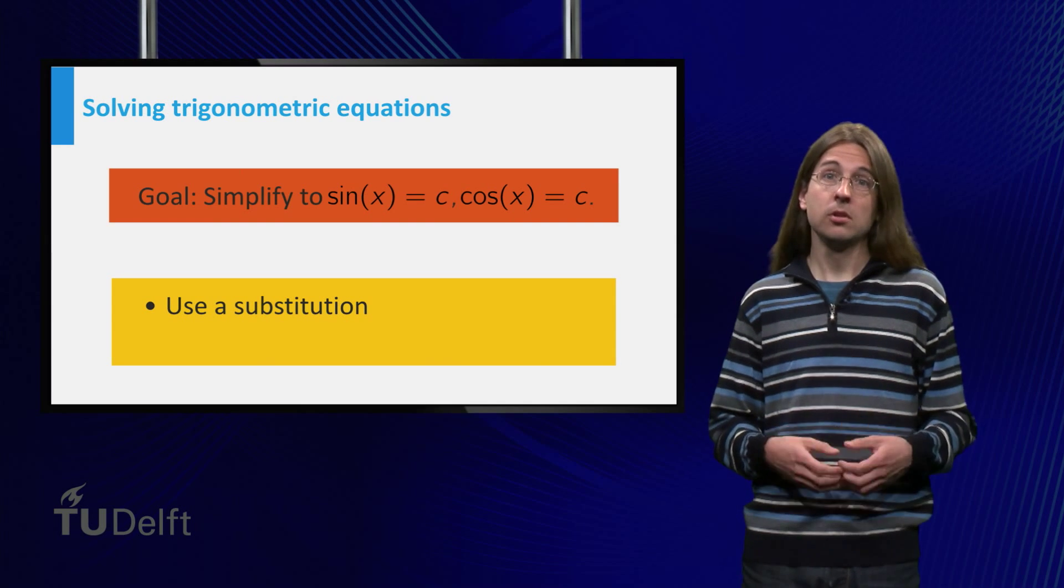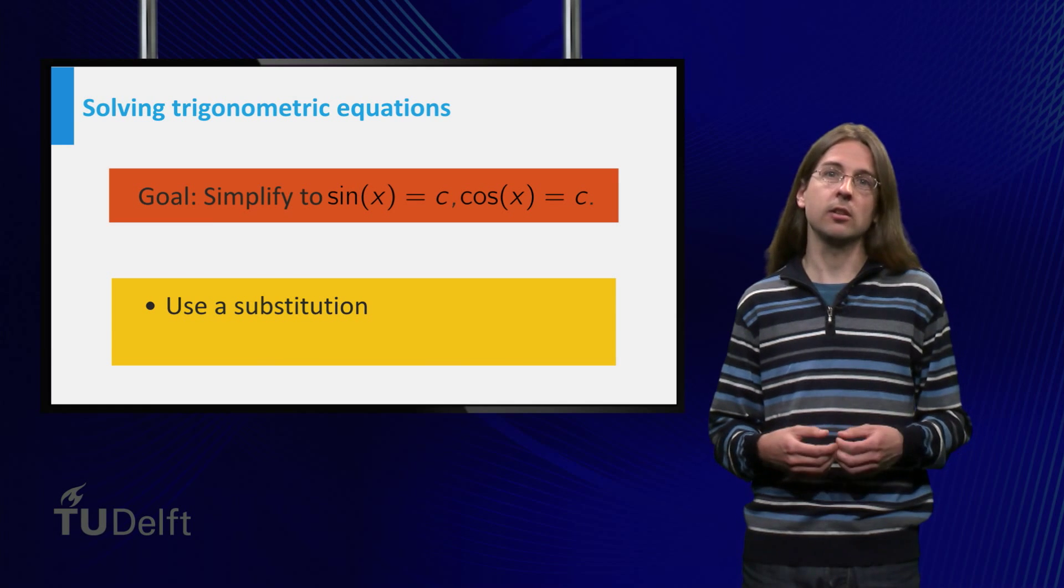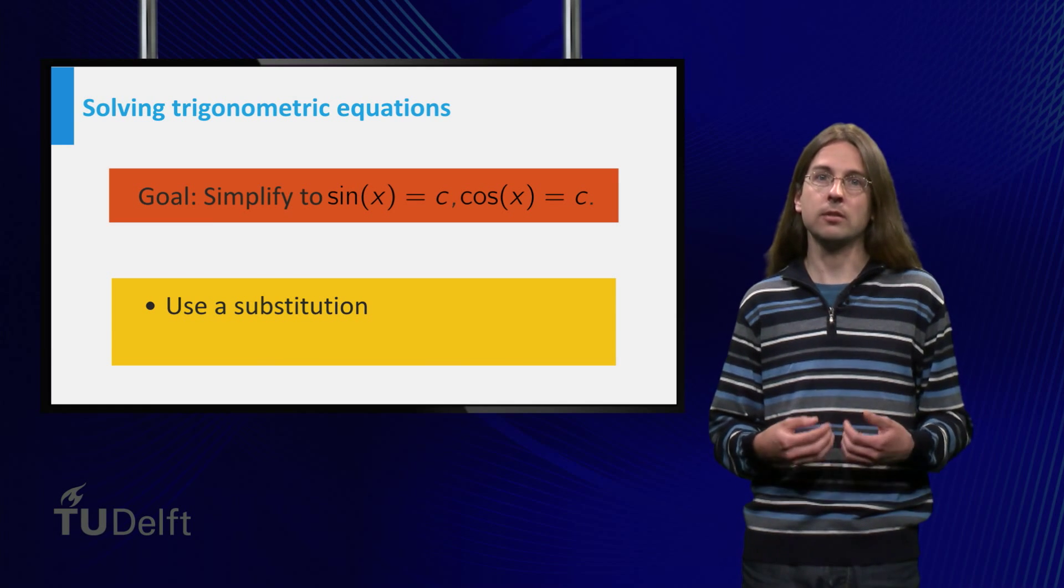In the previous example, you have used a substitution to simplify our equation to the basic form cos(x) = c. A second method for simplifying is to use trigonometric identities.